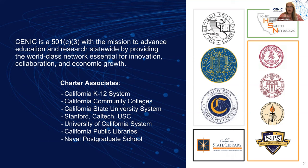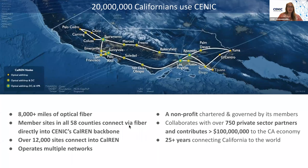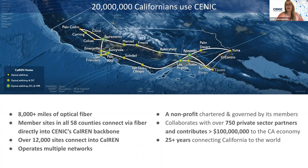We are governed by our charter associates, and the K-12 system in California is one of those, so you have people that sit on the Scenic board. We are, of course, a nonprofit. We have over 8,000 plus miles of optical fiber in the state, and all 58 counties connect via fiber to Scenic's Cal Run backbone. Over 12,000 sites connect, and we collaborate with over 750 private sector partners in the state. We have 25 plus years of connecting California as an R&E network.